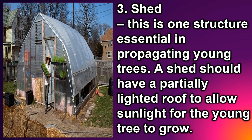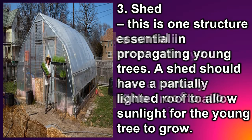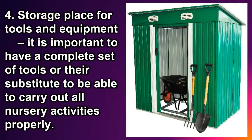Three: shed — this is one structure essential in propagating young trees. A shed should have a partially lighted roof to allow sunlight for the young tree to grow. Four: storage place for tools and equipment — it is important to have a complete set of tools or their substitute to be able to carry out all nursery activities properly.